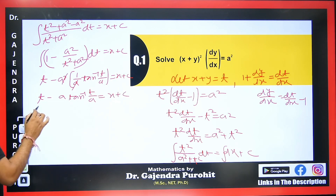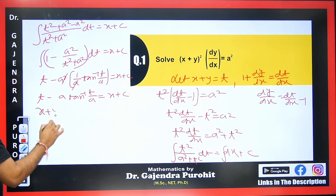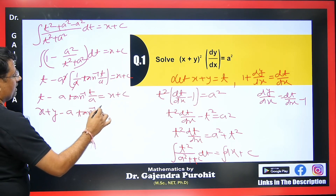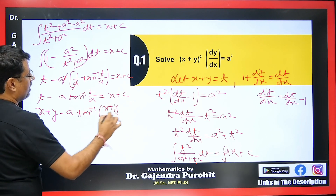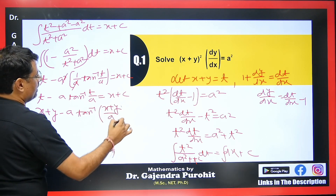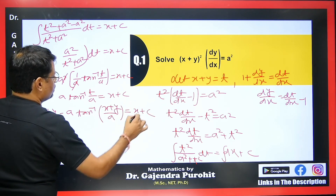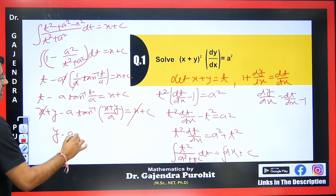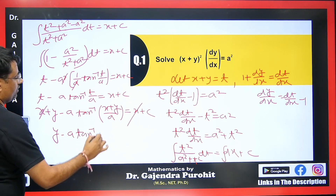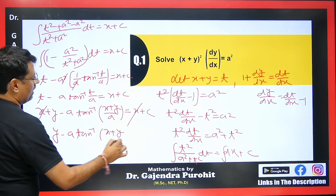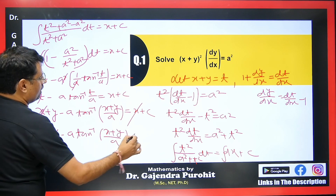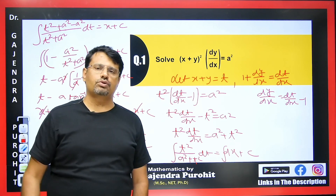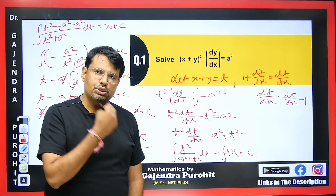Substituting back t = x + y: (x+y) − a · tan⁻¹((x+y)/a) = x + c. The x terms cancel, giving the final answer: y − a · tan⁻¹((x+y)/a) = c. This is the solution to the first equation.